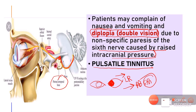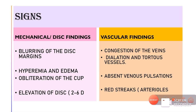The signs found on the disc and retina in papilledema can broadly be divided into mechanical disc findings and vascular findings. Starting with mechanical findings: the first is blurring of the disc margins, which usually starts in the upper, lower, and nasal margins. The temporal margin of the optic disc is affected last. In early papilledema, the upper, lower, and nasal margins get blurred while the temporal margin is affected later.